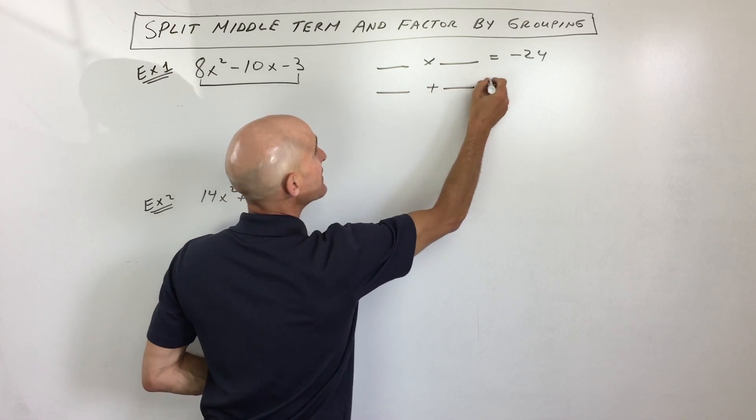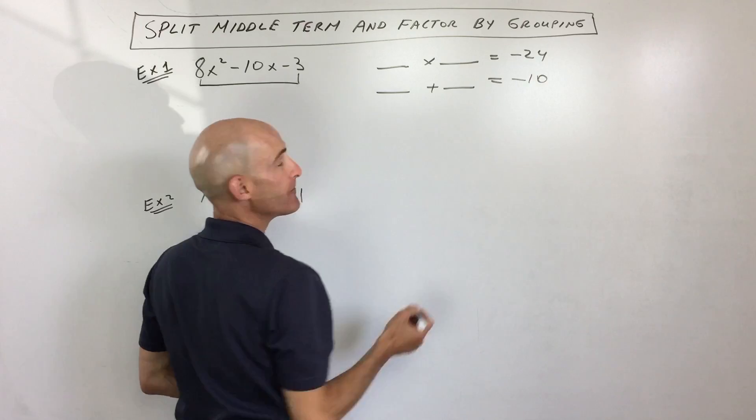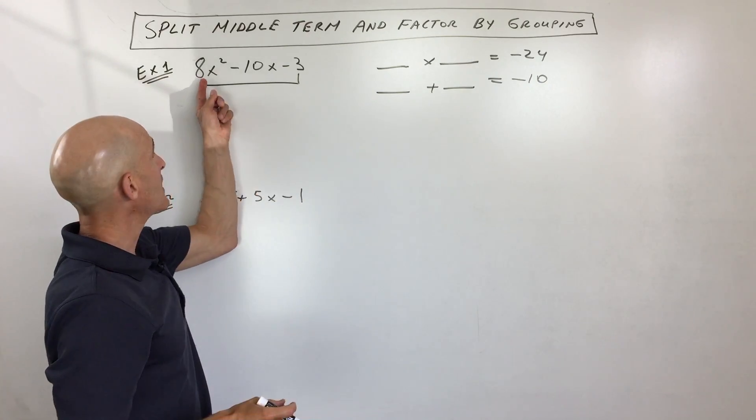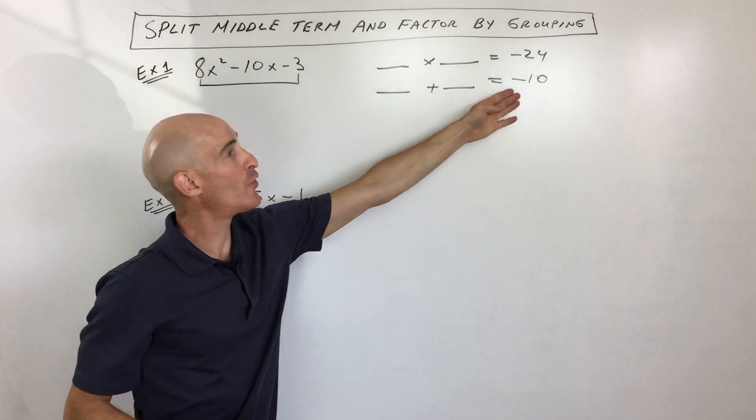But those same two numbers have to add to the middle coefficient, which in this case is negative 10. So you're with me so far? You have to multiply to negative 24, but they have to add to this middle coefficient, negative 10.